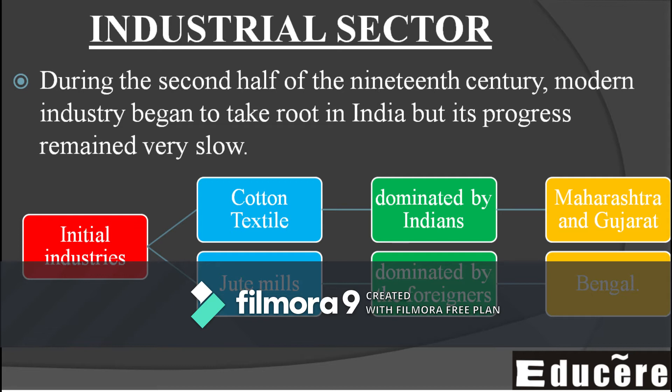The second thing established was jute mills. Jute mills were basically located in Bengal. The jute mills became so concentrated in this region that even today Bengal — including what is now Bangladesh — is associated with jute. So the two main industries developed in India were cotton textiles in Gujarat and jute mills in Bengal.